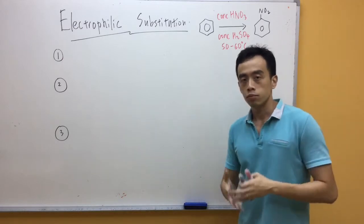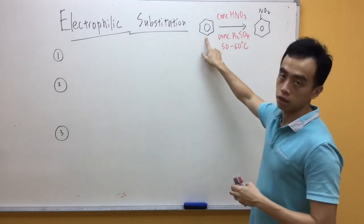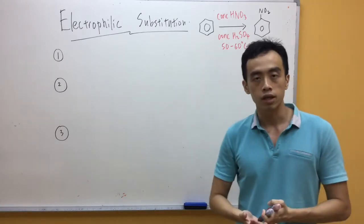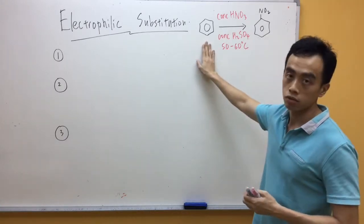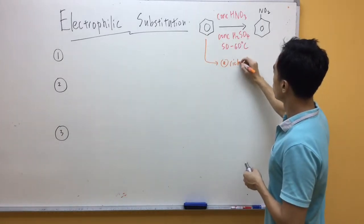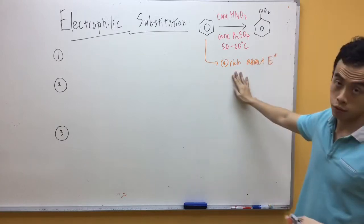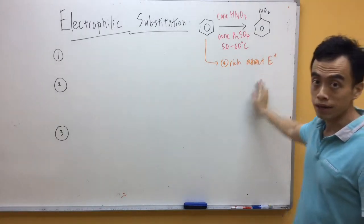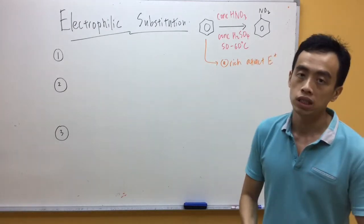So in this case, it's pretty clear that benzene itself is electron-rich because of the benzene ring. Inside the ring are six electrons. So when the benzene is electron-rich, it can attract an electrophile.